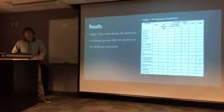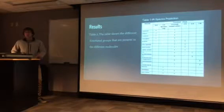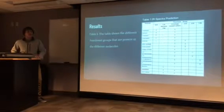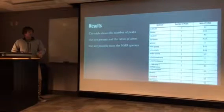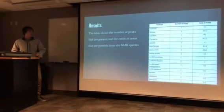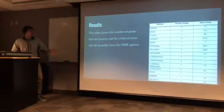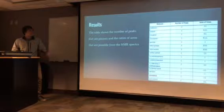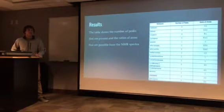The table also includes carbon double-bonded to oxygen, and carbon bonded with chlorine or carbon bonded to oxygen. Using the NMR spectra, we were able to determine the number of ratios that each molecule has and the number of peaks present, to help narrow down what the possible types were.